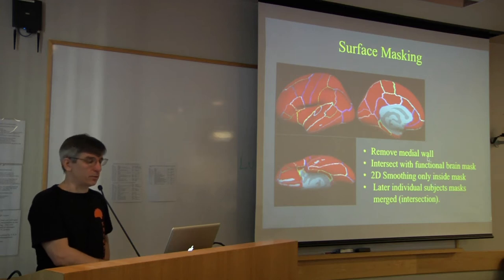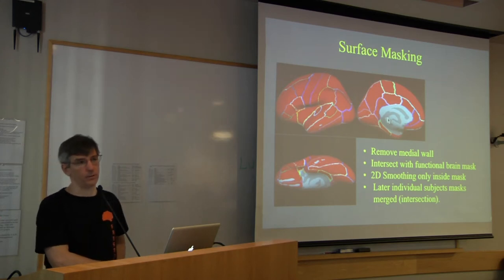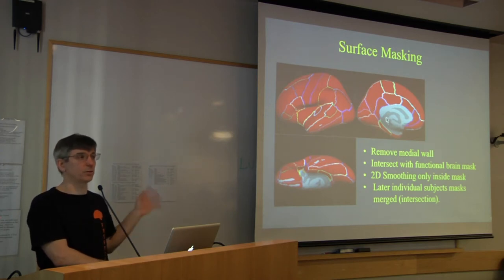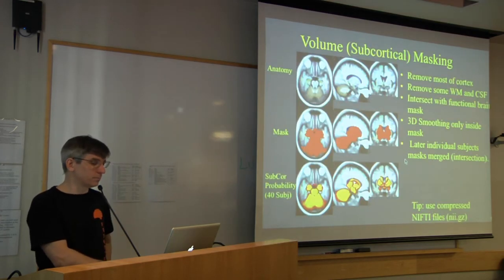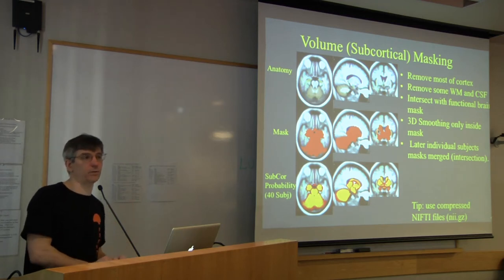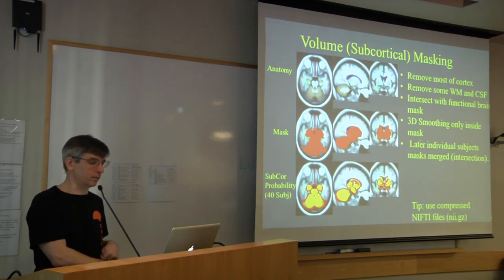For each space, there is its own masking. For the surface, we mask out everything in the medial wall — mostly white matter and CSF. The medial wall does cut through subcortical structures, but since we have another way to analyze subcortical structures, we mask this part out so we don't analyze the same voxels twice. For the subcortical regions, the mask ensures that cortical voxels in the volume are not analyzed in the subcortical mask.